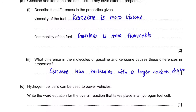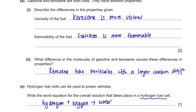Part E: hydrogen fuel cells can be used to power vehicles. Write the word equation for the overall reaction that takes place in a hydrogen fuel cell. This is a fixed equation: hydrogen plus oxygen gives water. That's the end of question 1.